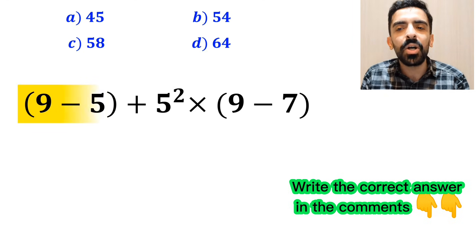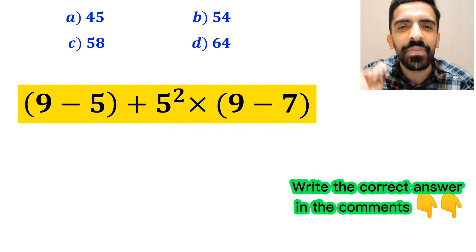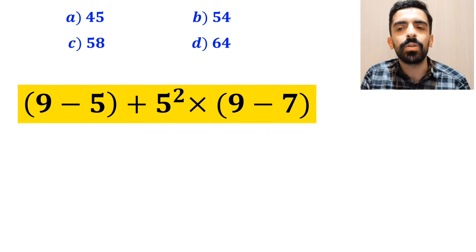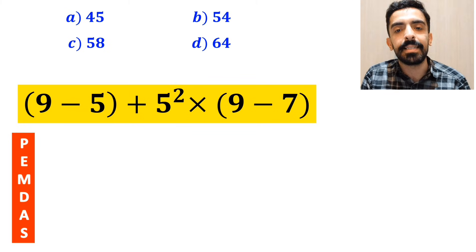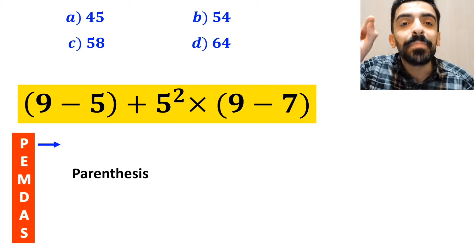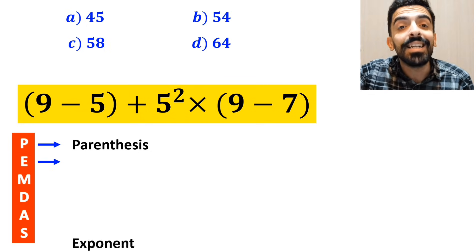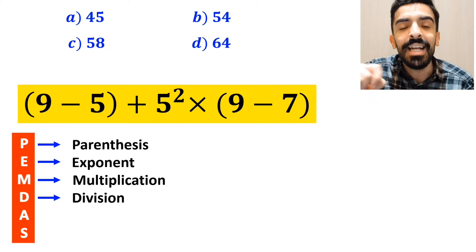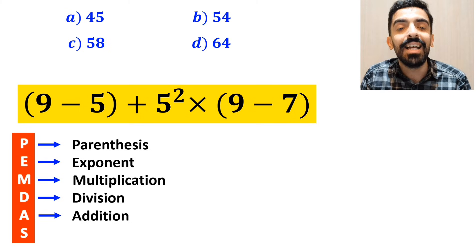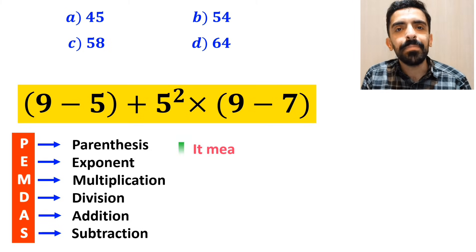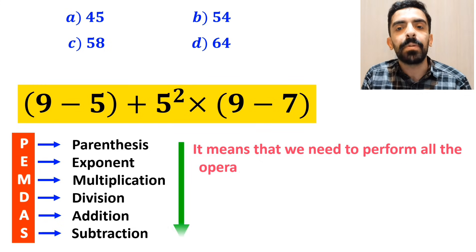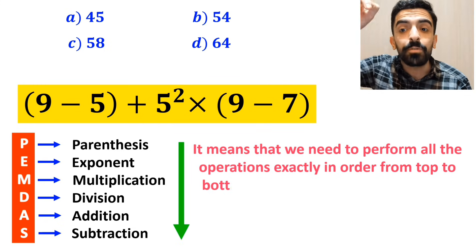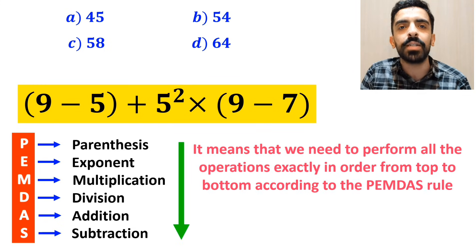Alright, now let's go through this question step by step and solve it together. To solve this question, we must follow the PEMDAS rule step by step. In this rule, P stands for parenthesis, E stands for exponent, M stands for multiplication, D stands for division, A stands for addition, and S stands for subtraction. It means that we need to perform all the operations exactly in order from top to bottom, according to the PEMDAS rule.